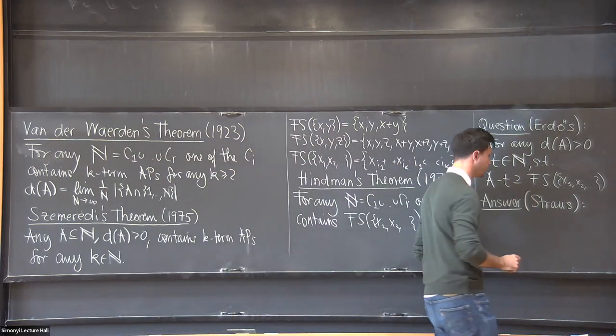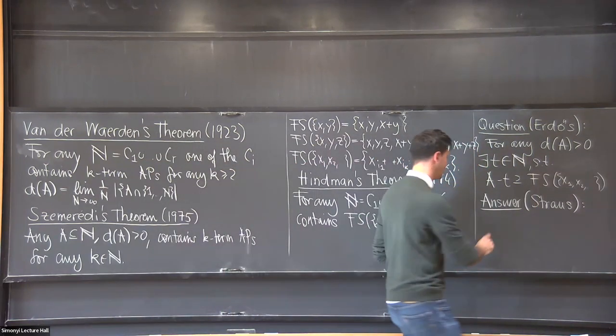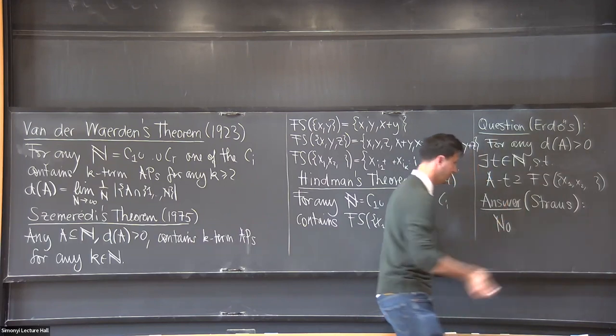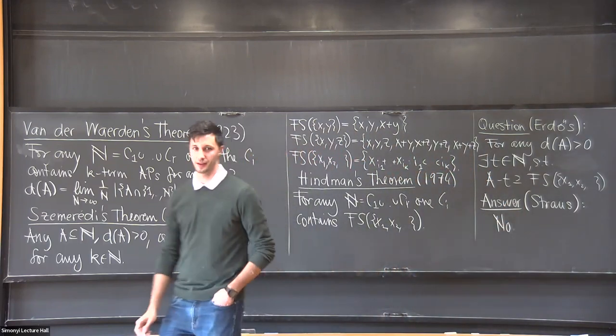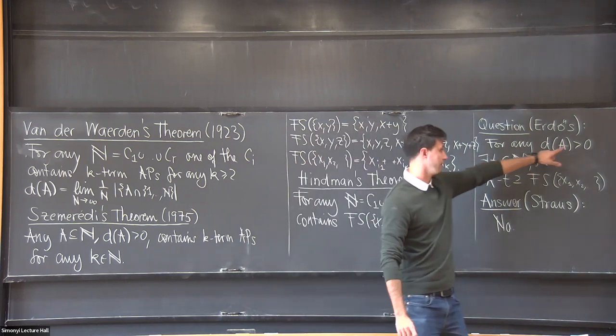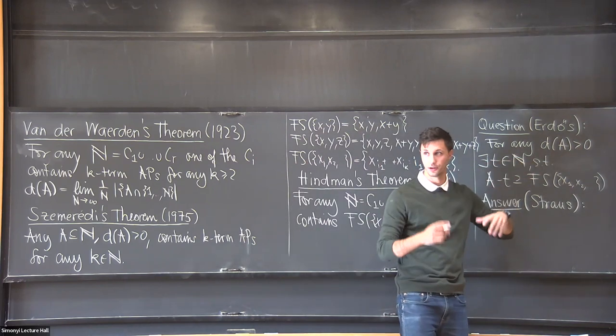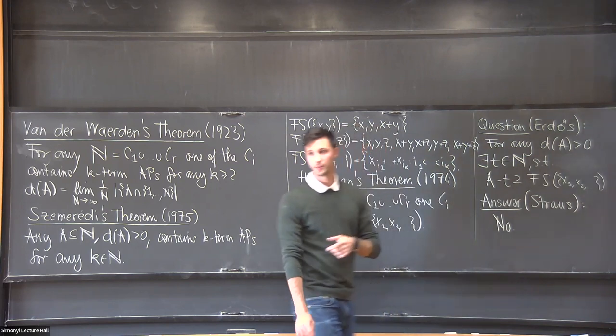Unfortunately, shortly afterwards, Ernst Strauss gave a counterexample, so the answer is no. And actually, you can find sets whose density is arbitrarily close to one—so they're quite large—that already fail this particular property here.